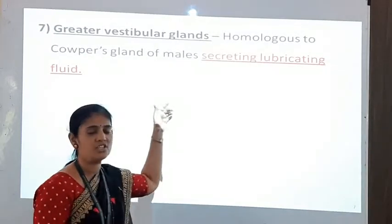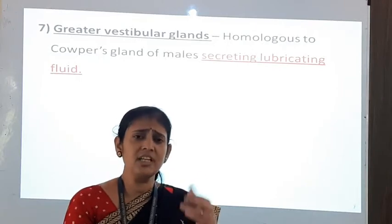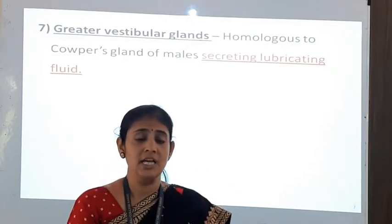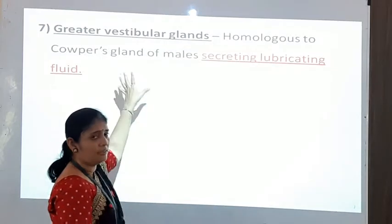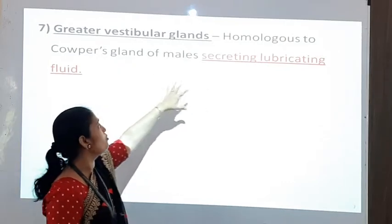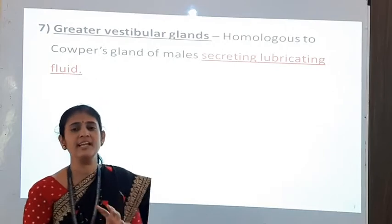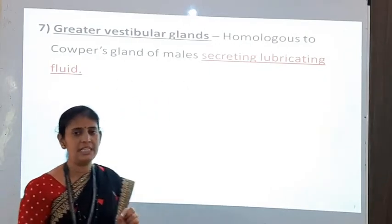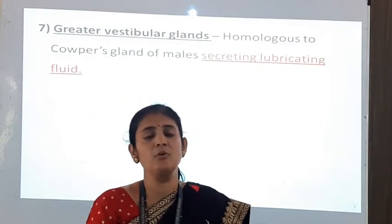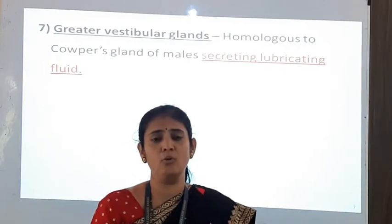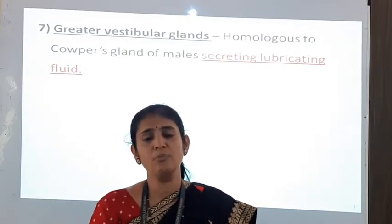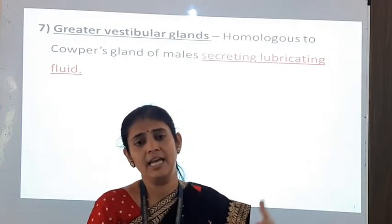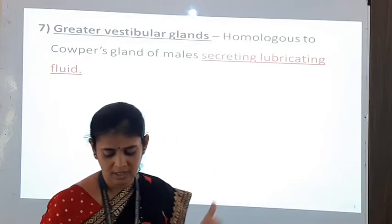The next part is the greater vestibular glands. Just as in the male reproductive system there are seminal vesicles, prostate gland, and Cowper's gland secreting fluid, similarly in the female body there are glands called greater vestibular glands, which are homologous to Cowper's glands of males. These greater vestibular glands secrete lubricating fluid, which is important during sexual intercourse for easy insemination.